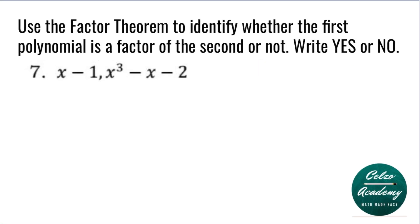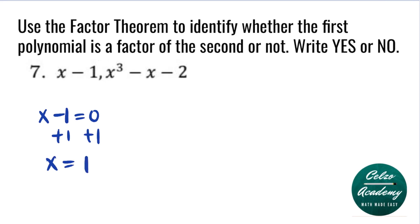Question 7: x minus 1 and x cubed minus x minus 2. Our first polynomial is x minus 1, so we equate it to zero. Adding 1 to both sides, our x value is equal to 1. Using the factor theorem, we will plug in x equals 1 into x cubed minus x minus 2. So we will have 1 to the third minus 1 minus 2.